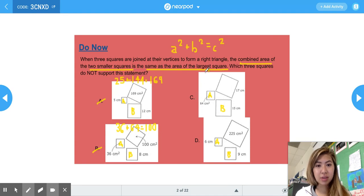For C, we have 64 is the area of A. And then we have 15 is the side length of square B. 15 times 15 is 225. And then 17 squared is 289. If we do 64 plus 225, we do get 289.